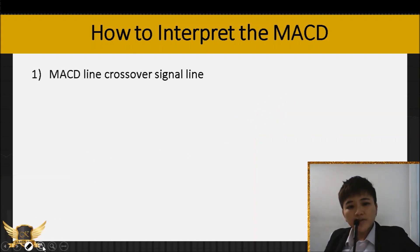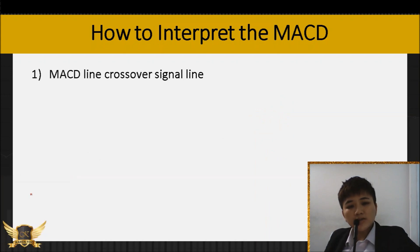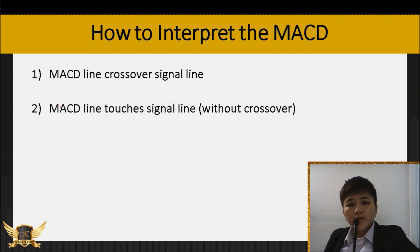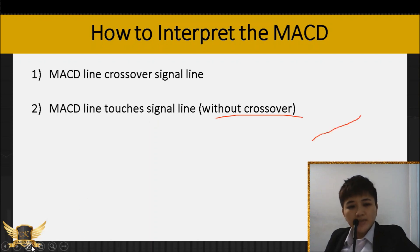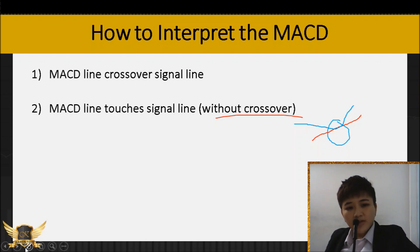The second way that you can interpret MACD is when the MACD line touches the signal line without a crossover. Instead of crossing over, your MACD line would just come down and touch the signal line and then go back up — meaning both lines just touch each other but don't cross over.